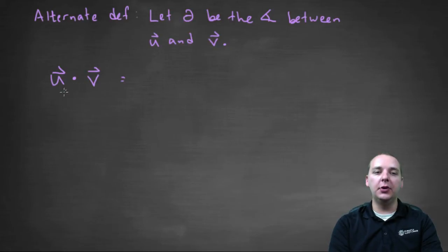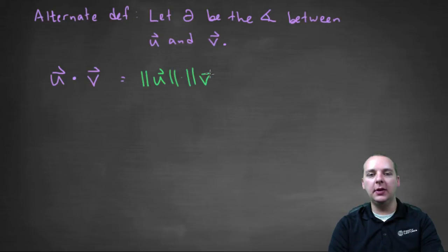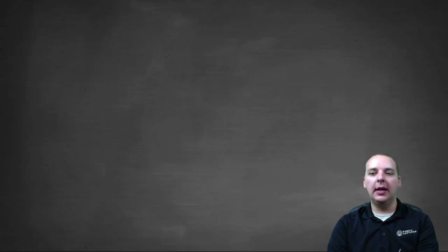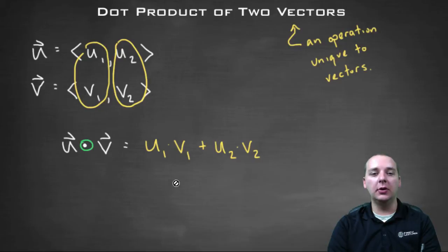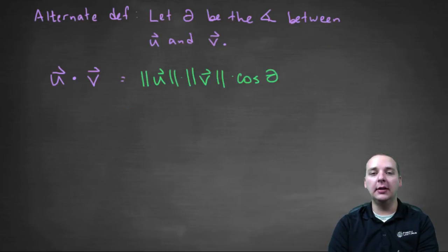An alternate definition for u dot v is going to be the norm of u, or the magnitude of u, times the magnitude of v, times the cosine of the angle that's between them. If I were you, I would probably jot that one down on a note card, and commit that to memory. And I would also jot this formula down on a note card as well, because that's an important one as well. And we use both in different situations.